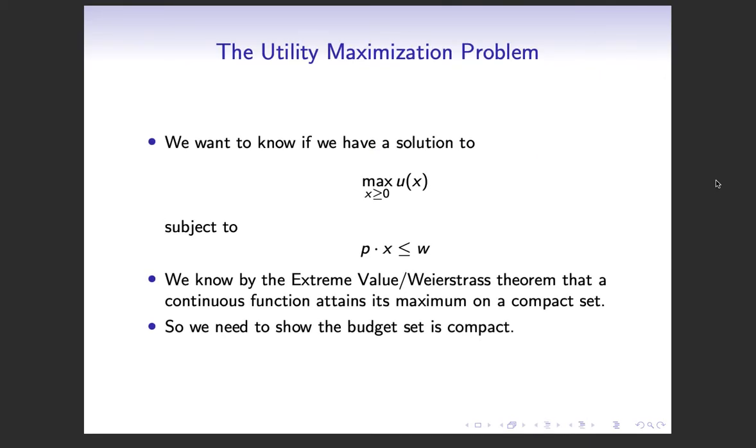So we want to solve the maximization from the utility maximization problem subject to the budget constraint. Usually we're going to invoke the extreme value theorem which I proved in another video. Sometimes it's called the Weierstrass theorem, but there's also other Weierstrass theorems, so I think extreme value is better.